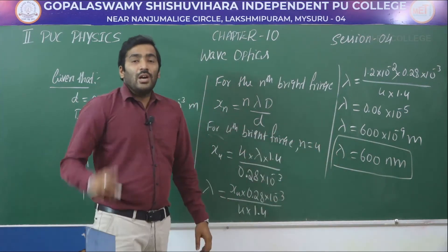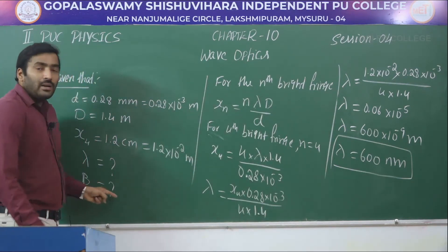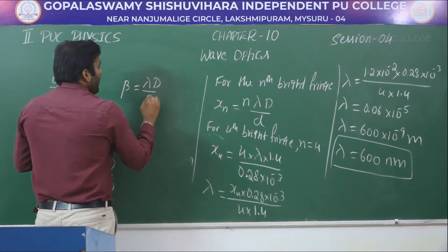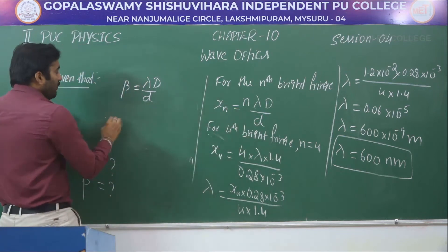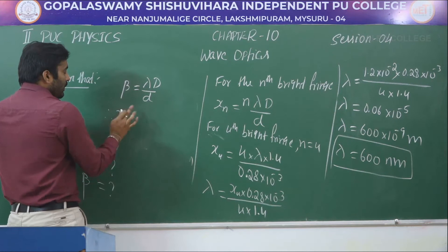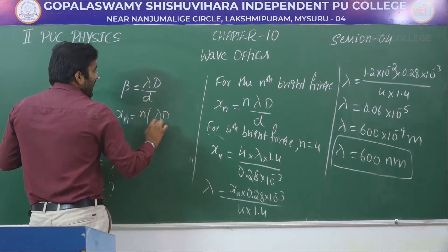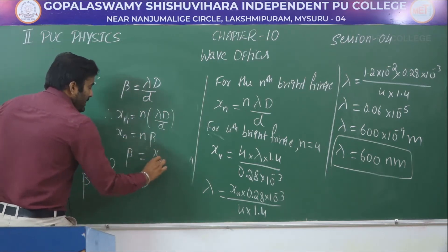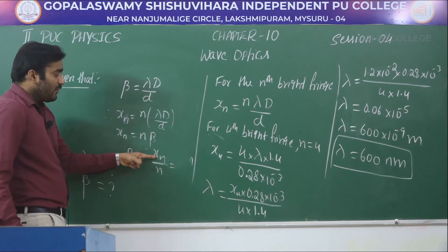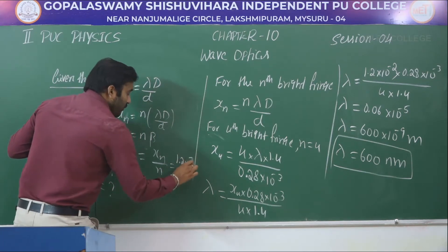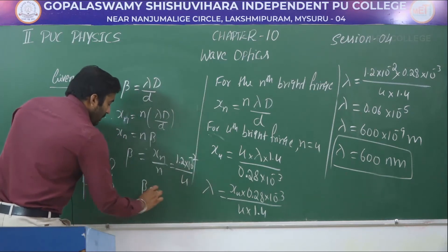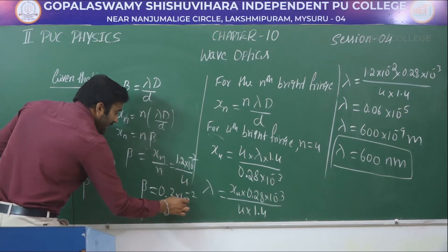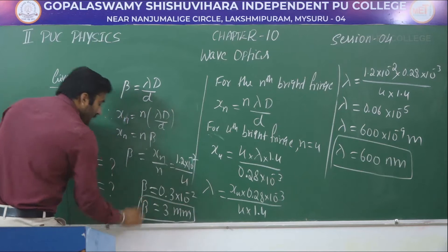Next, they have asked for the fringe width beta. We know beta = lambda D / d, and also xₙ = n × beta, therefore beta = xₙ / n. For n = 4, beta = x₄ / 4 = 1.2 × 10⁻² / 4 = 3 × 10⁻³ meter, which is 3 millimeter. So the fringe width beta is 3 millimeter.